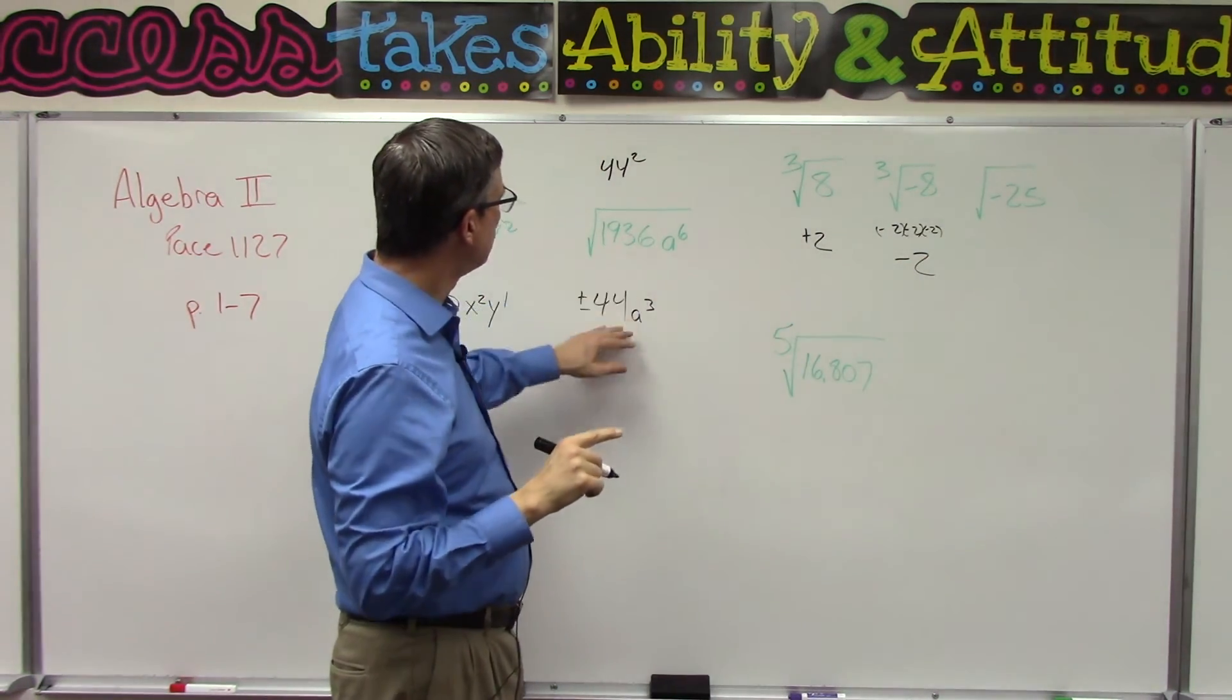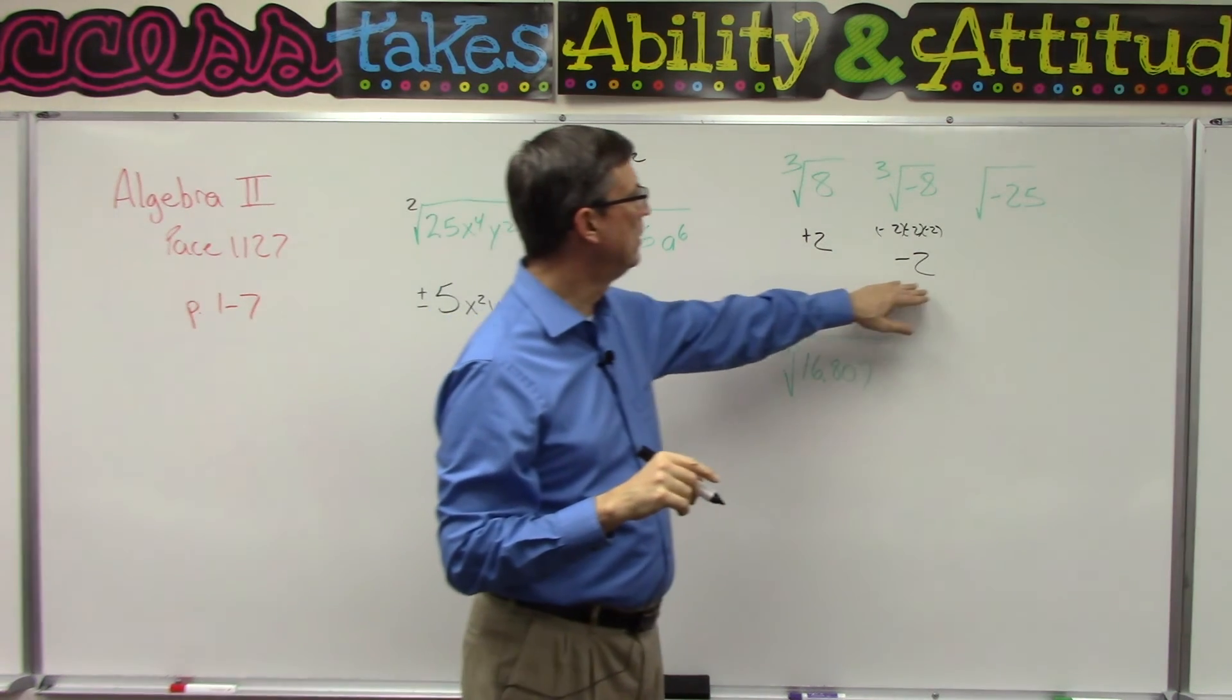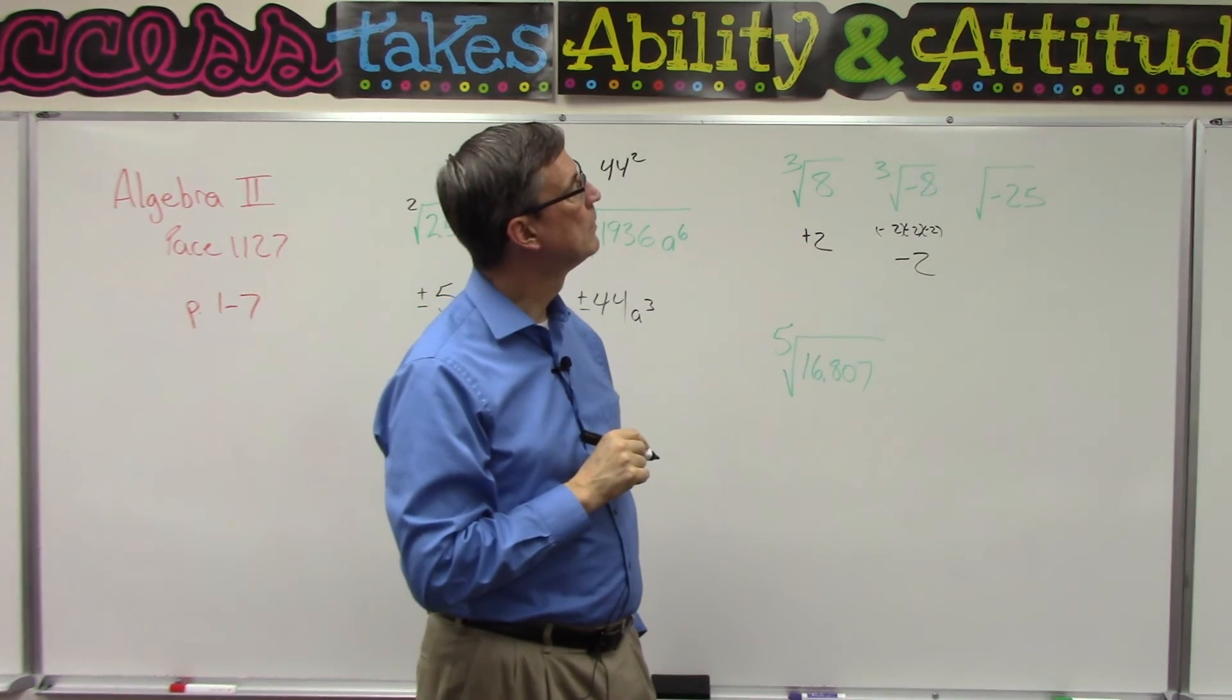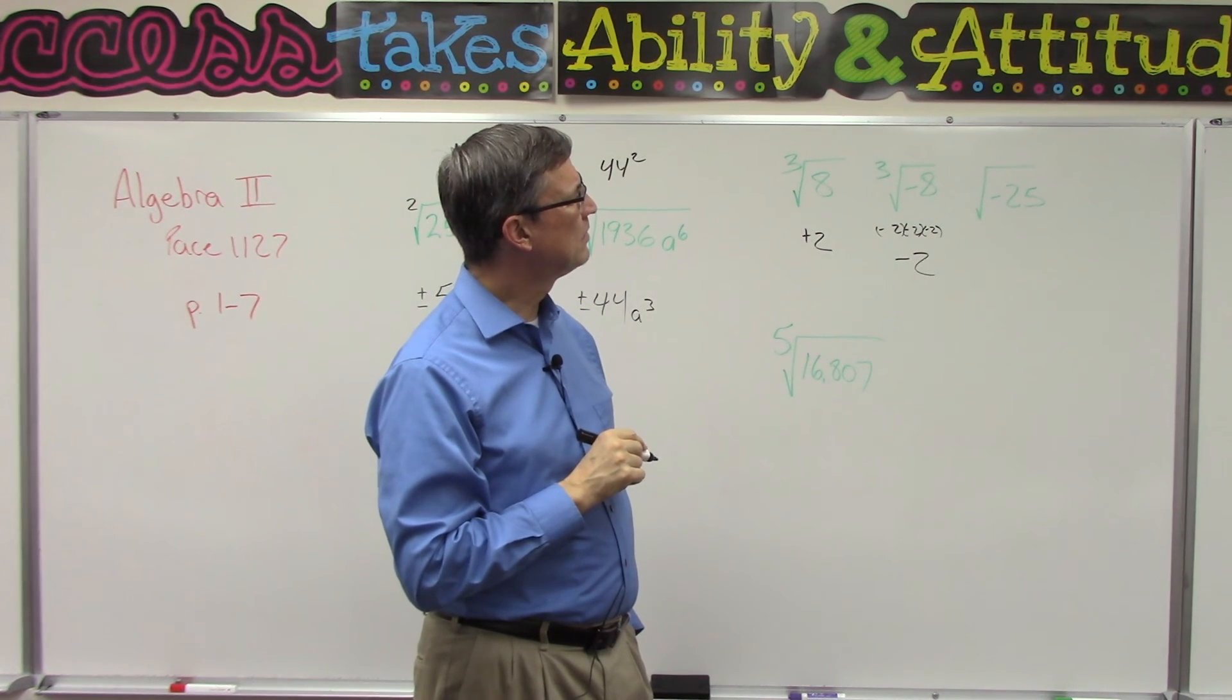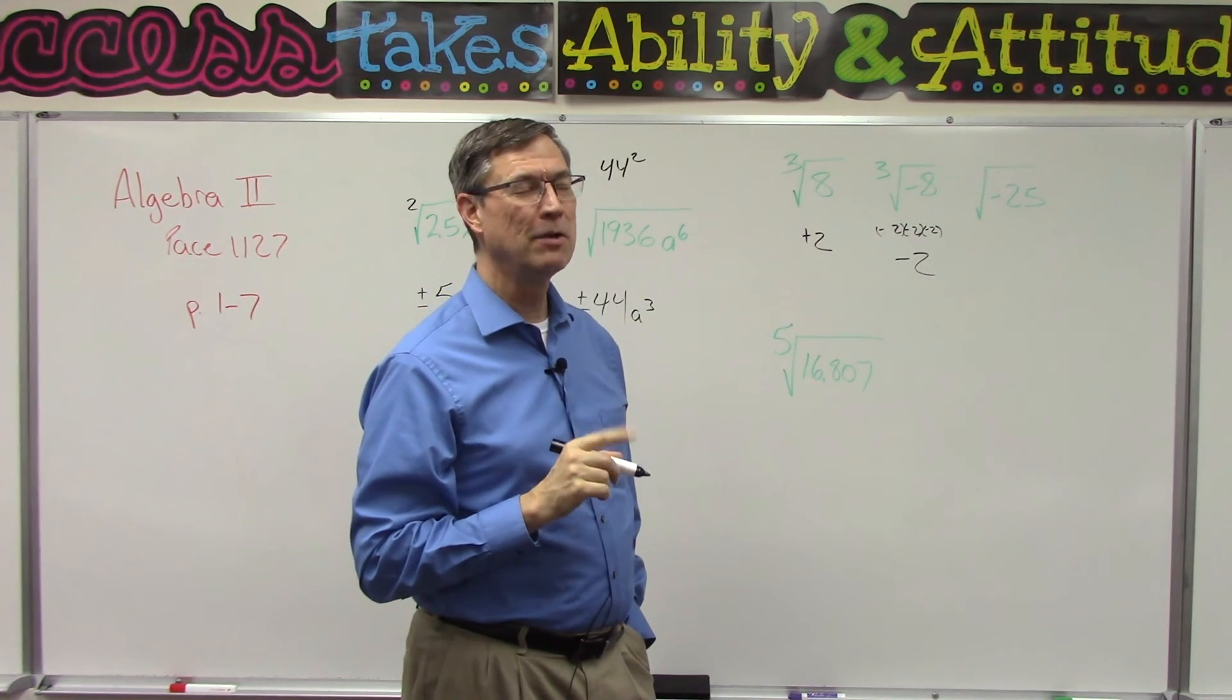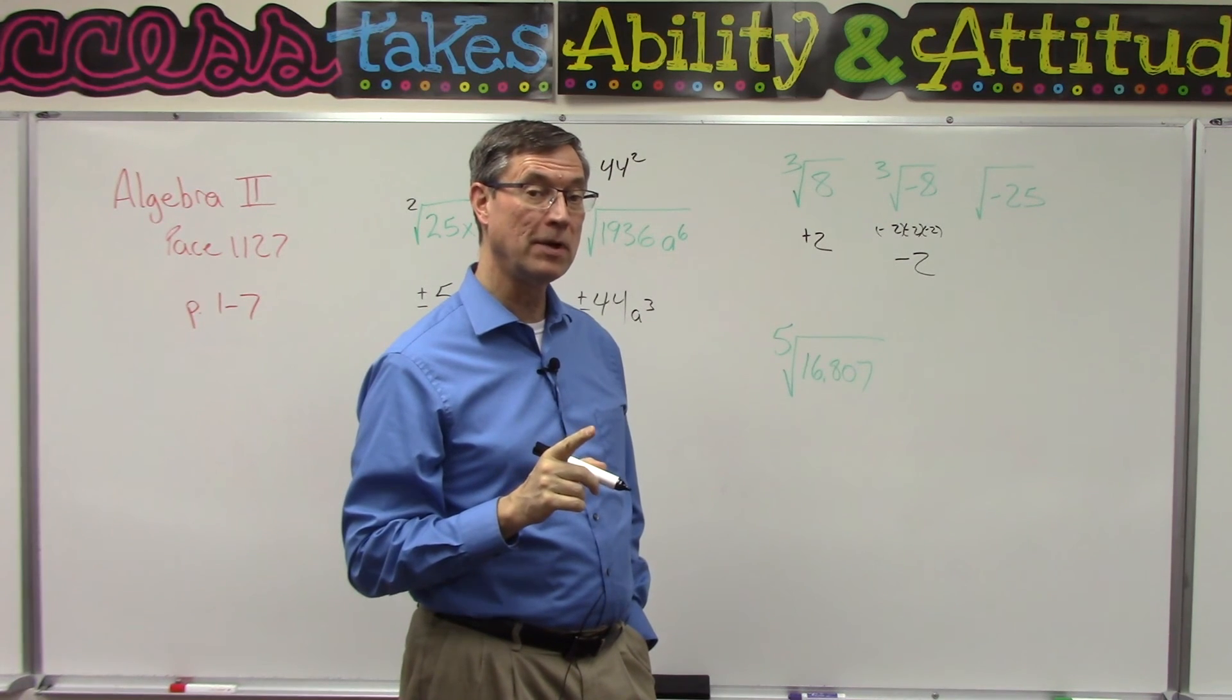What about the square root of negative 25? So you might think, 'Oh, 5.' Wait a minute, 5 times 5 is positive 25. I know negative 25—I mean negative 5. But think about it: negative 5 times negative 5 would actually give me positive 25.